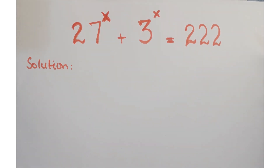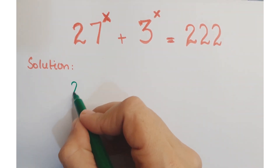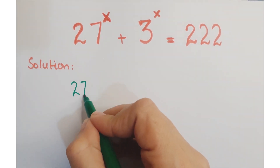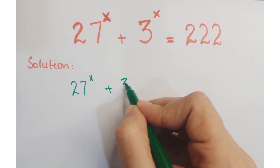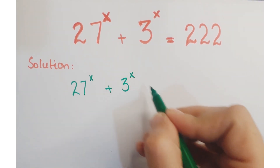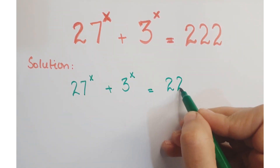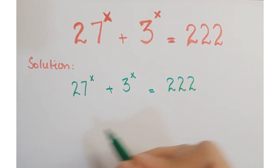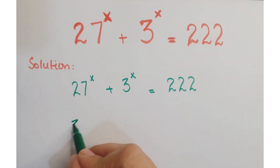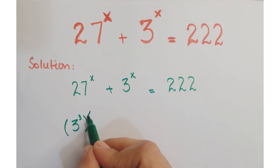Hi guys, look at this exponential question. The question is 27 to the power x plus 3 to the power x is equals to 222. As you know, 27 is a perfect cube of 3.